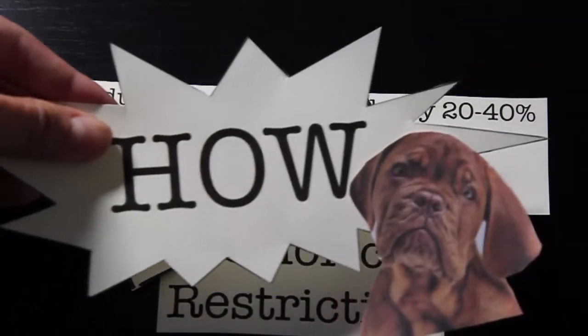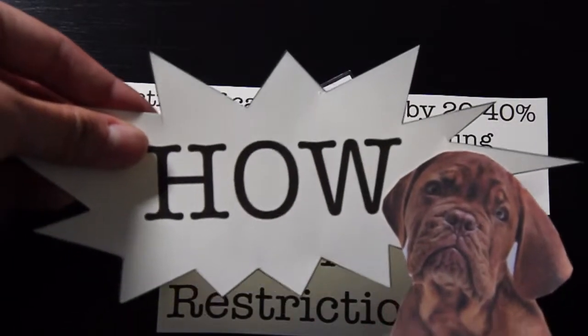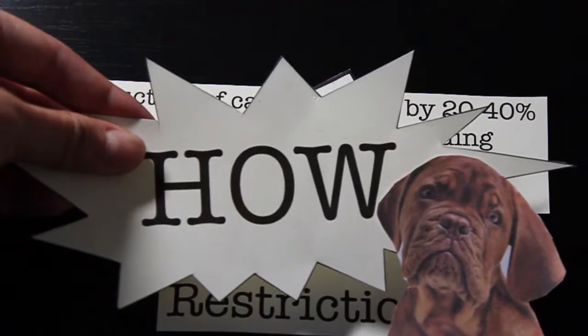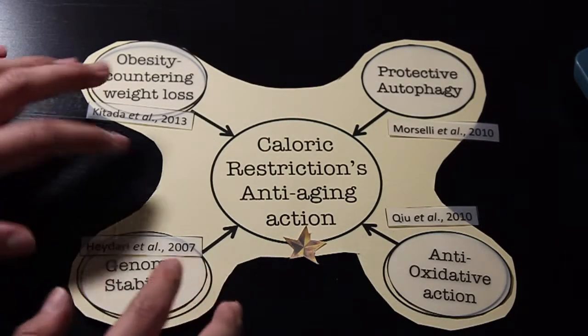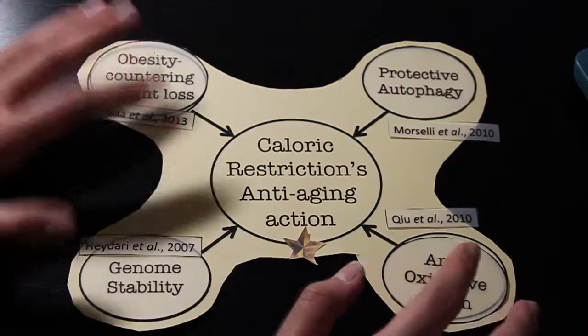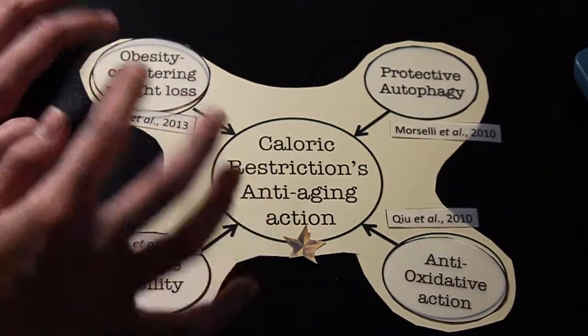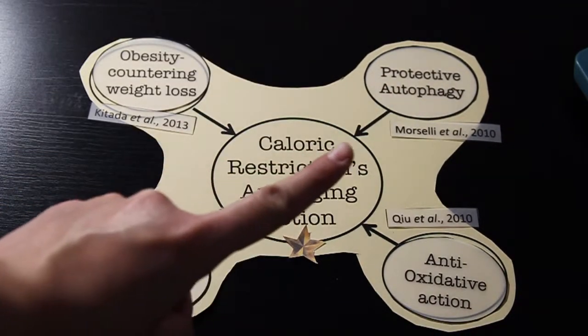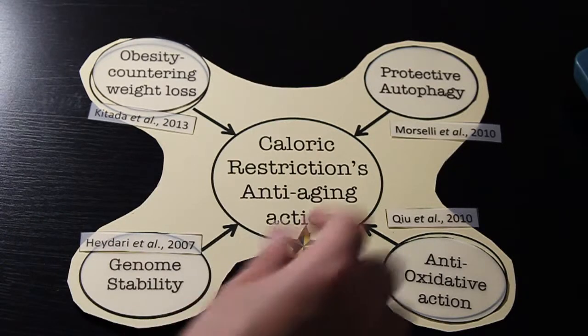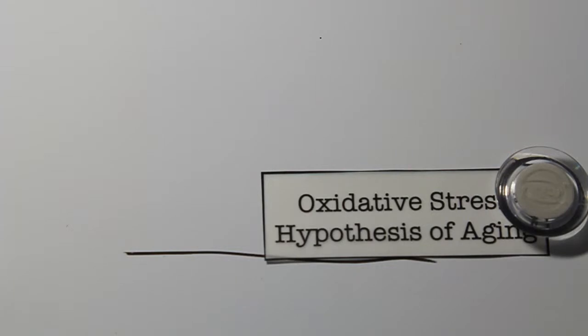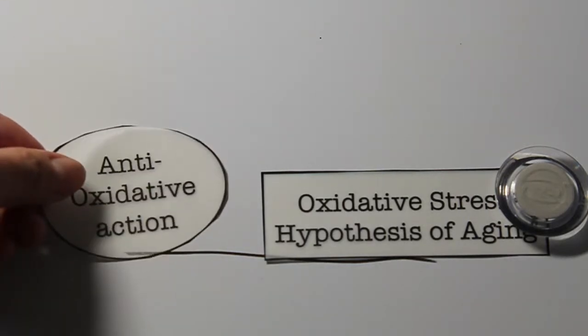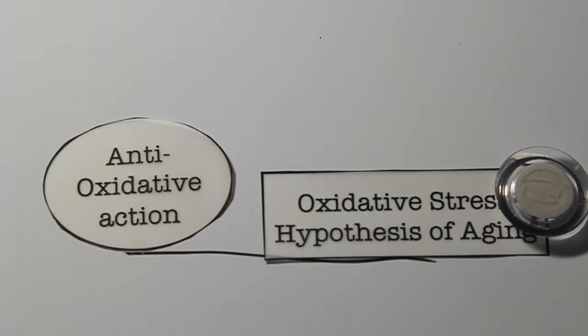The question is how? How does reducing your caloric consumption allow you to live longer? While many mechanisms have been proposed to explain calorie restriction's anti-aging action, one favored hypothesis that has been consistently reproducible is its anti-oxidative action. This mechanism is also in line with the oxidative stress hypothesis of aging.